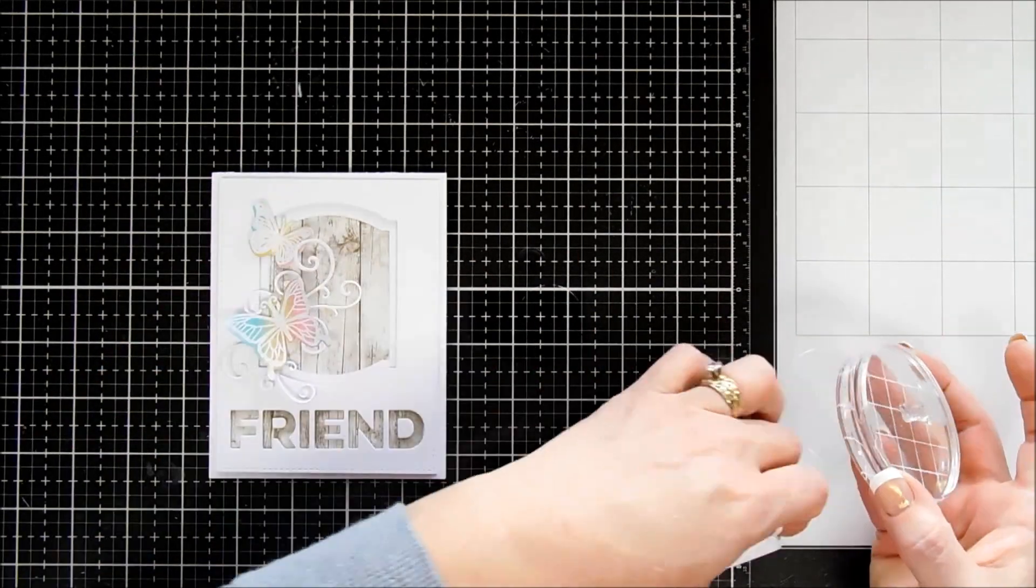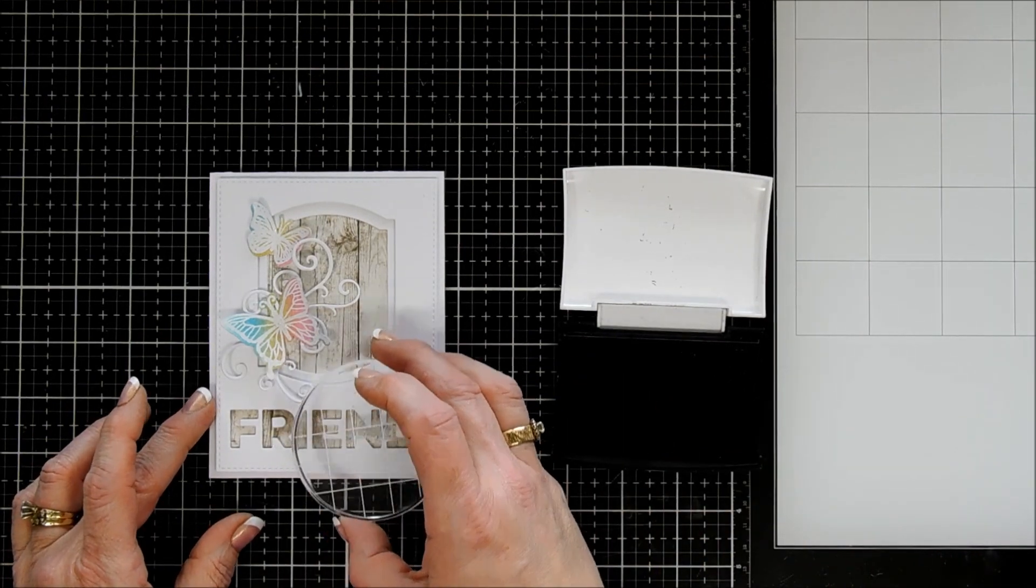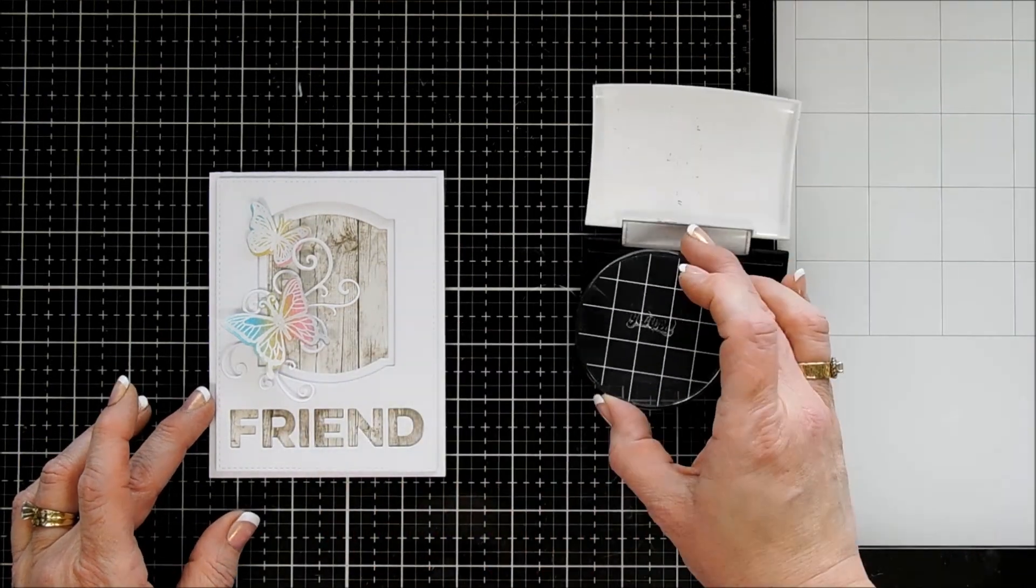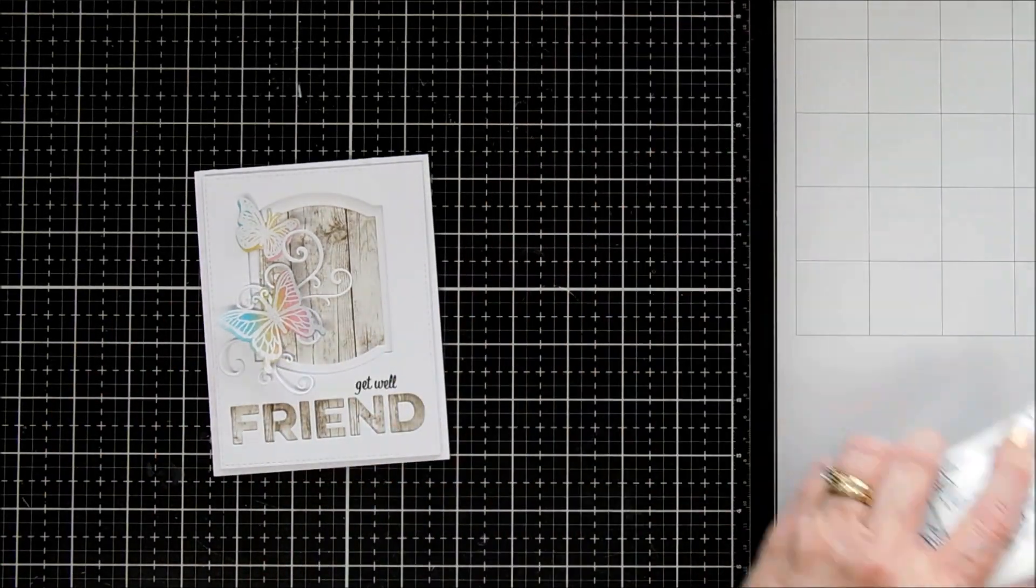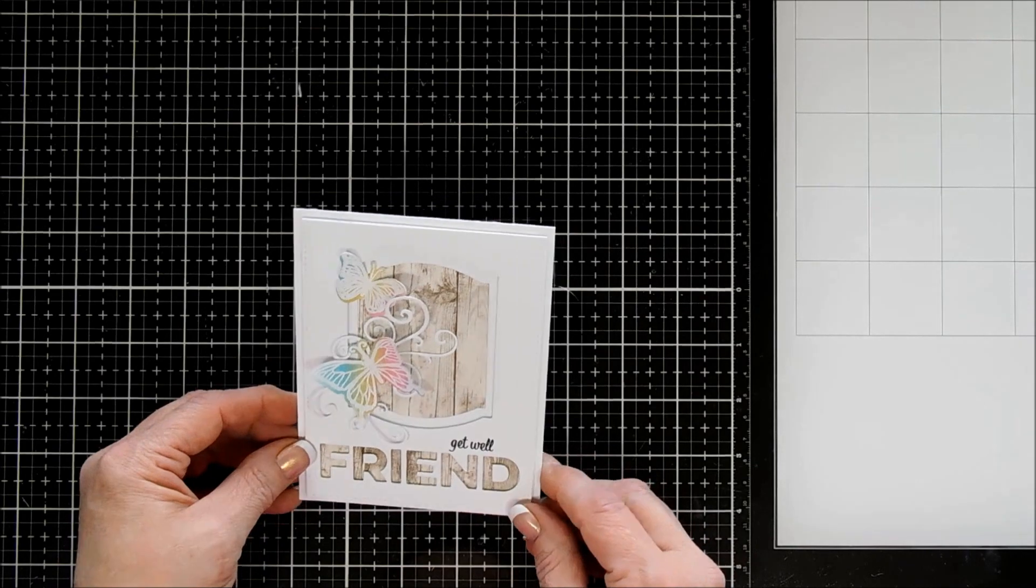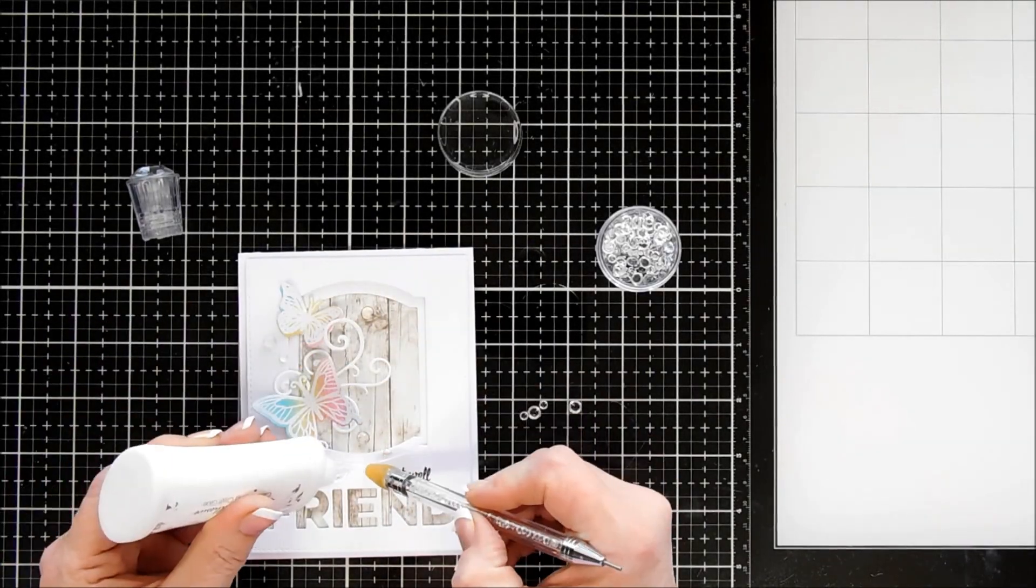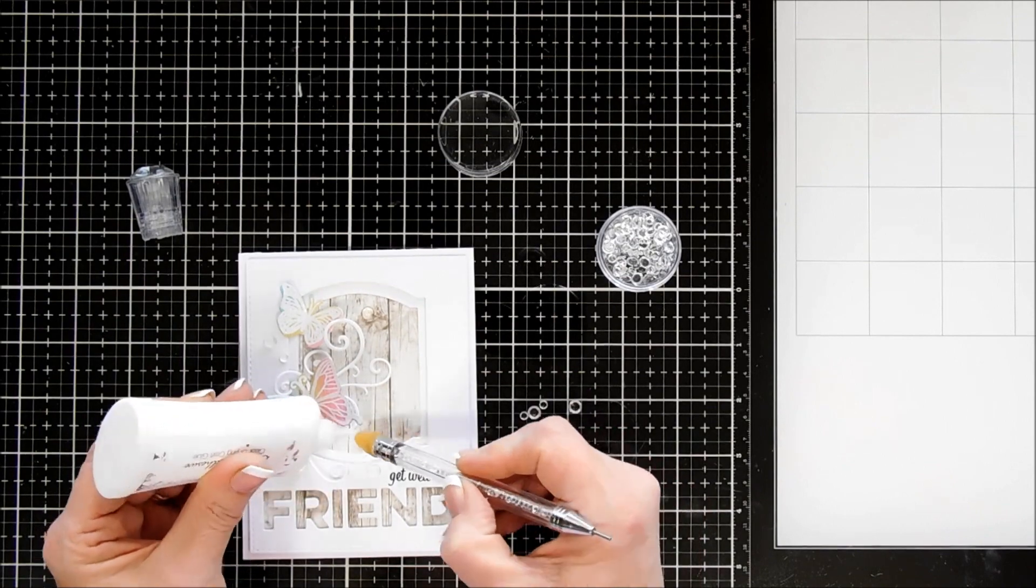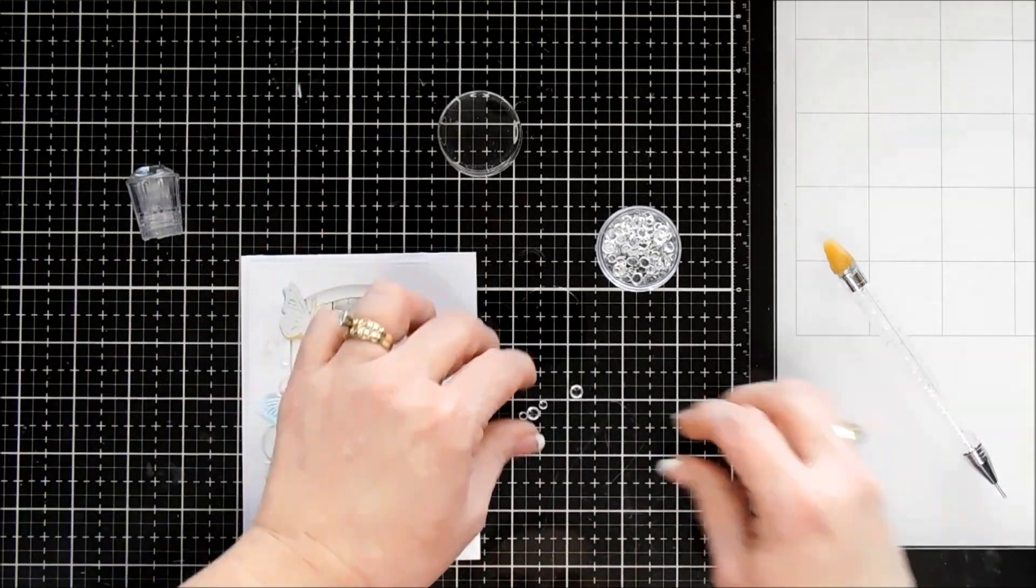We're going to stamp get well with VersaFine onyx black ink. And I'm stamping directly on my card even though it's popped up with foam tape. I made sure that I got a piece of foam tape behind the top portion of my friend. And then for bells and whistles, I'm adding some clear droplets here and there. And that finishes off my card today, guys.